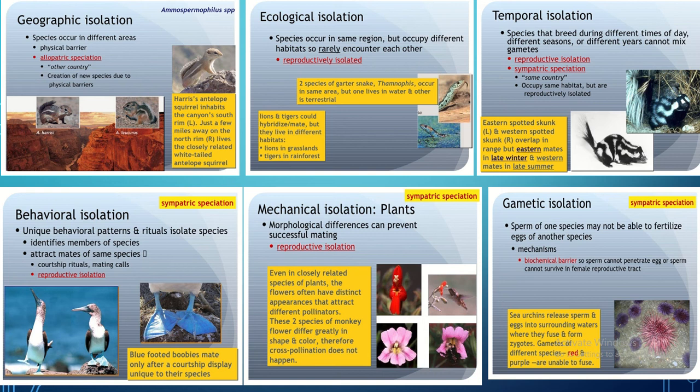Behavioral isolation occurs because organisms before mating show behavioral patterns or rituals to attract the opposite gender. This is another form of reproductive isolation — for example, blue-footed boobies mate only after a courtship display unique to their species.